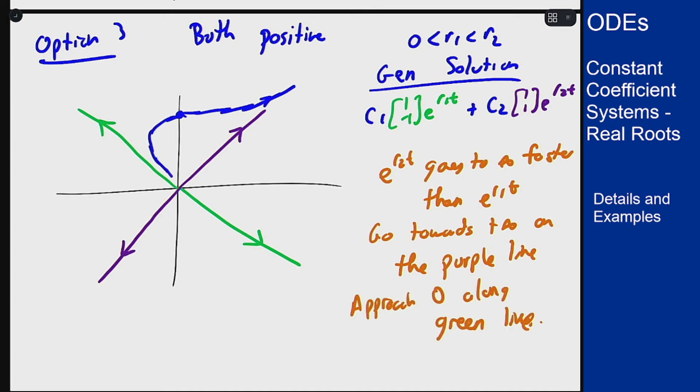Back this way like this and we're always running away and we can draw the same thing for all the other setups here. We get a picture like this and this is called a nodal source to contrast the nodal sink. It's a source and everything is sort of flowing away from it like the source of water. This is when both eigenvalues are positive.